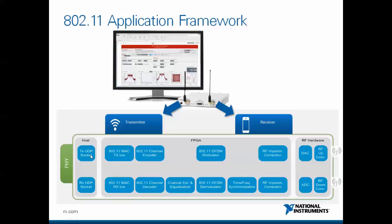User data can be received from a UDP socket. The transmitter on the FPGA implements the lower MAC functionality and also performs the 802.11 channel encoding and OFDM modulation. RF impairments are then corrected, which is part of the USRP Rio driver, and finally it is sent out by the RF hardware as a real RF signal.